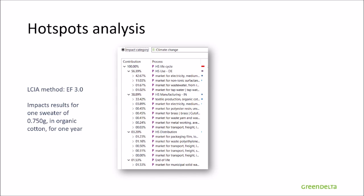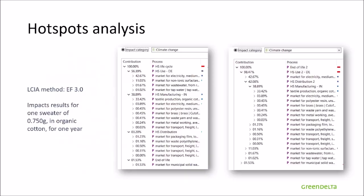If we had kept the traditional linear structure, the results would be the same, but harder to read, because each stage is included within the one that comes afterwards in the supply chain. For instance, if you want to calculate the use stage's contribution, you would have to subtract the rest of the chain from the overall impact. So it is not wrong — it is just harder to analyze. We recommend using the centralized structure.